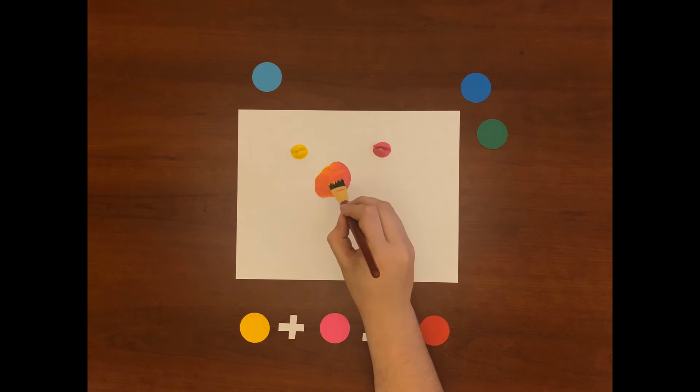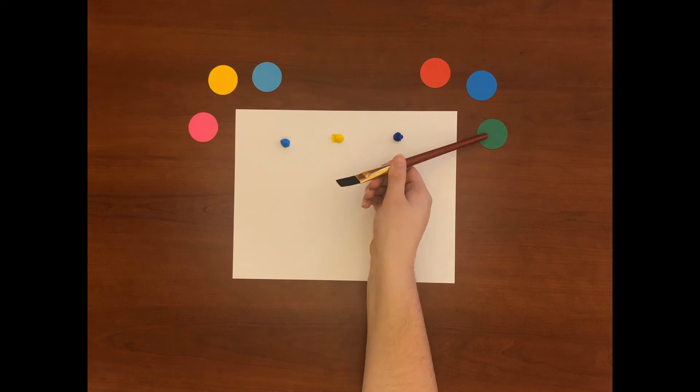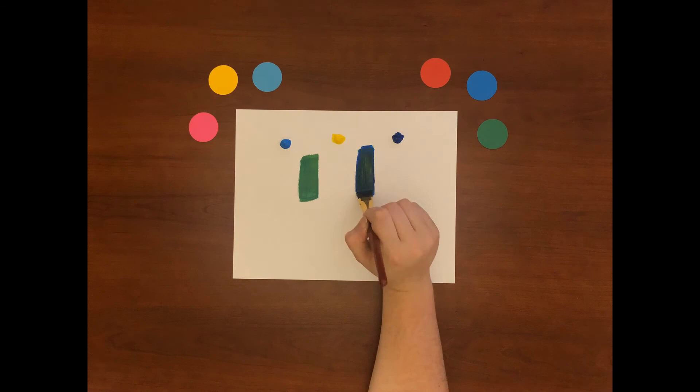Here's an example with green. If you mix cyan and yellow you'll get a vivid version of green whereas if you mix blue and yellow you'll get green but it'll be desaturated.